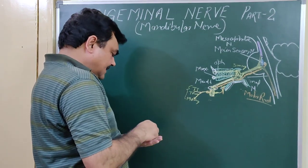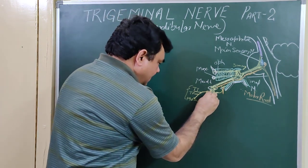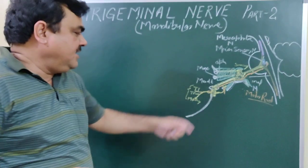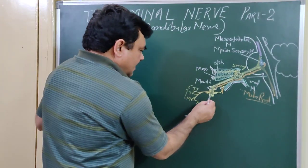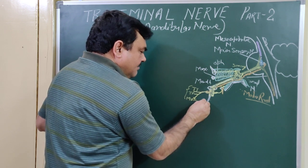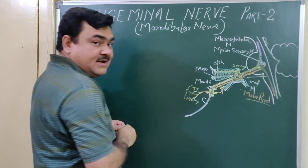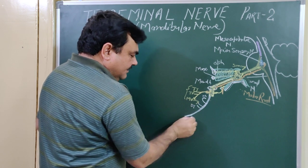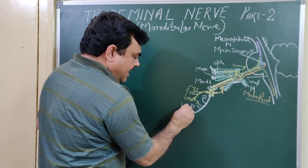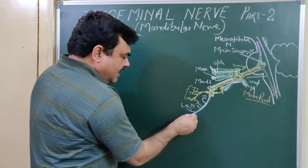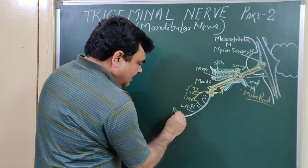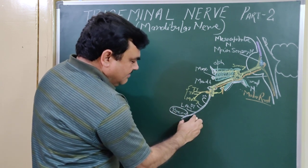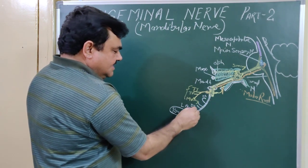The main trunk then divides into an anterior division and a posterior division. The anterior division is predominantly motor. It gives the masseteric nerve to masseter, deep temporal nerves, and nerve to lateral pterygoid. The buccal branch is the sensory component of the anterior division, while the other three branches are motor.